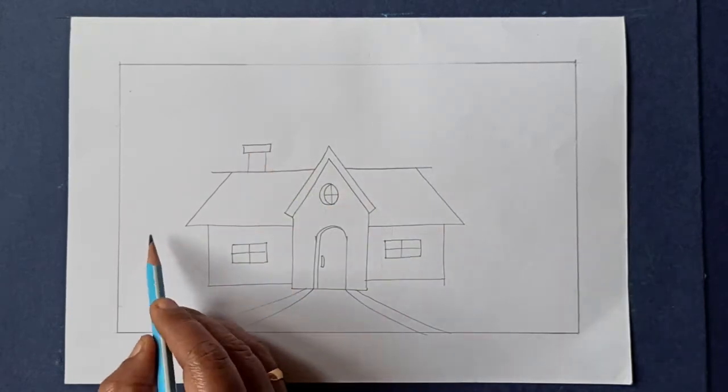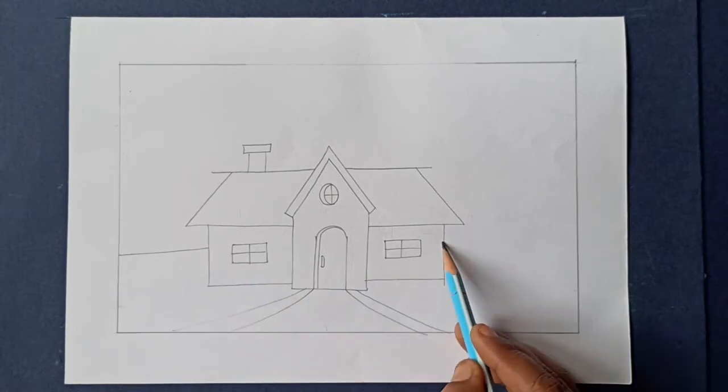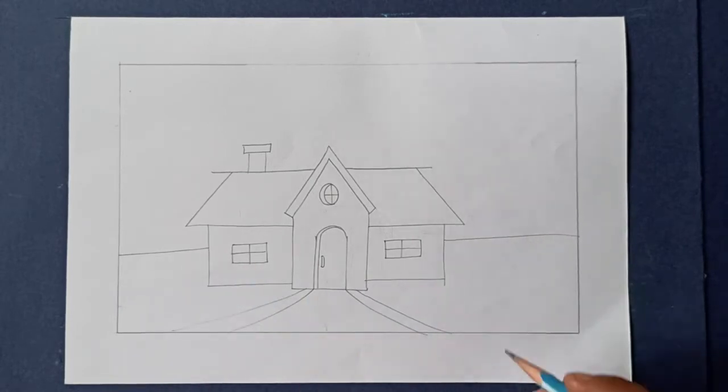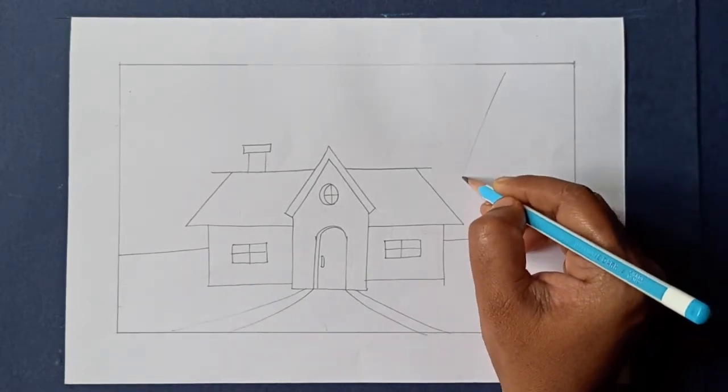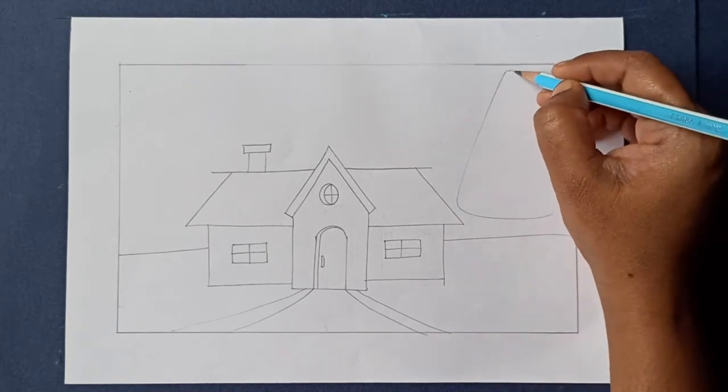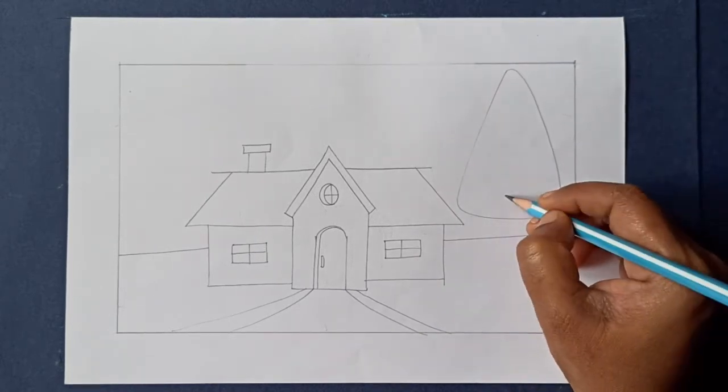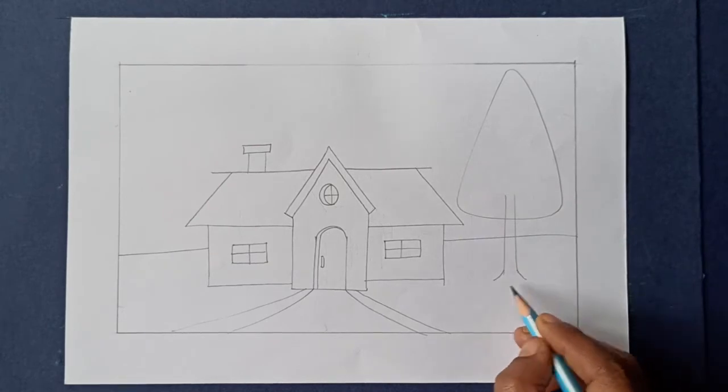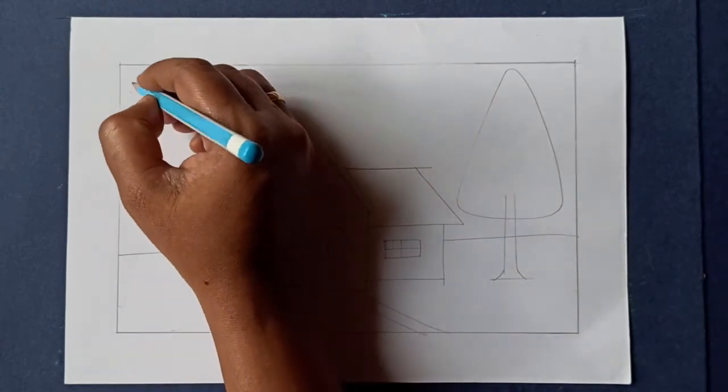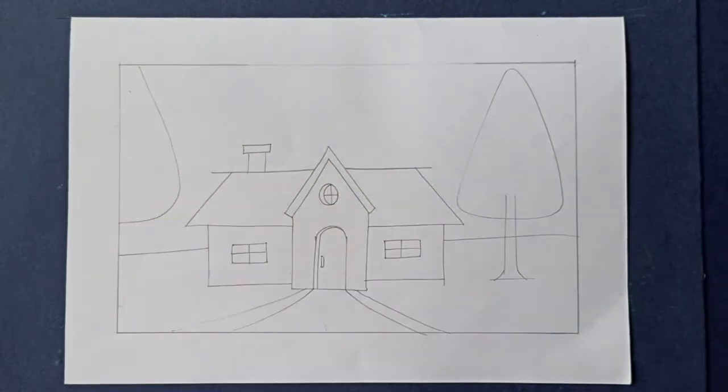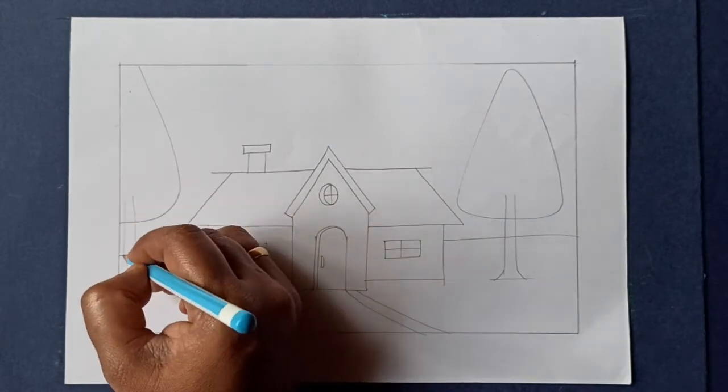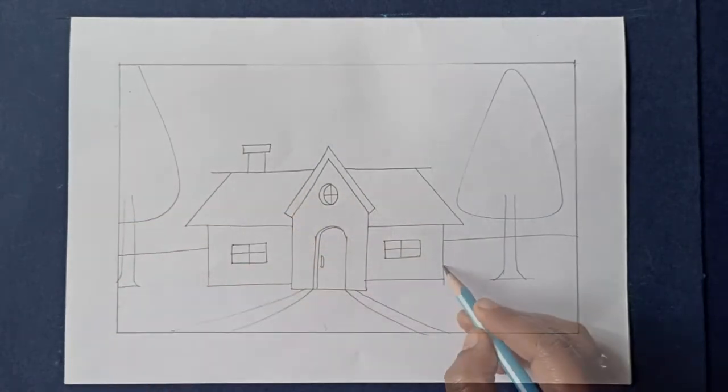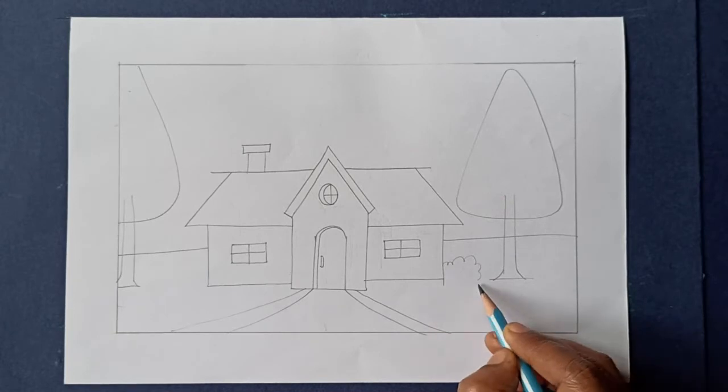Draw a simple line behind the house. Add a triangle shape. Draw the trunk and complete the tree. Make another tree on this side. Draw small bushes near the house.